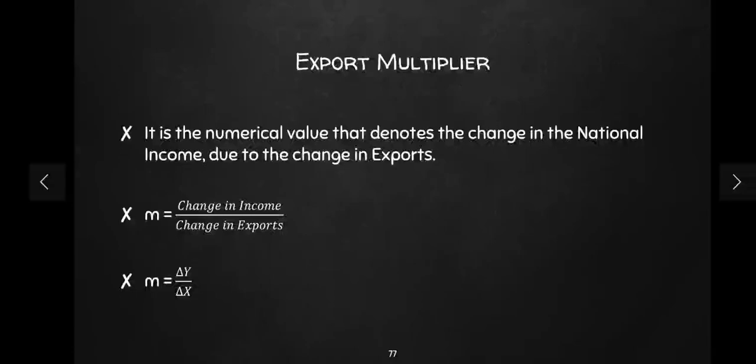Simply put, the formula is: change in national income divided by change in exports. We define the variables as delta Y upon delta X — that is, change in income divided by change in exports.